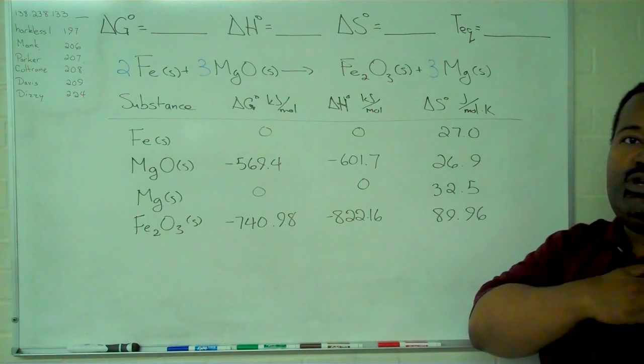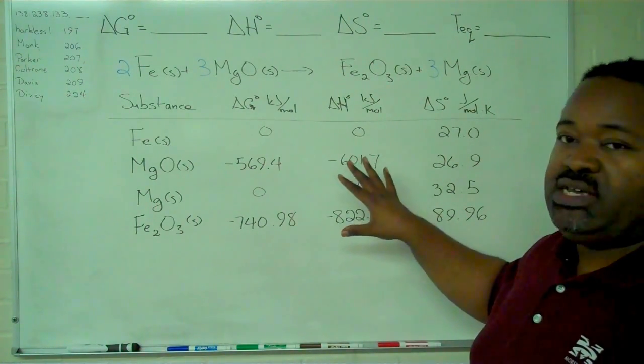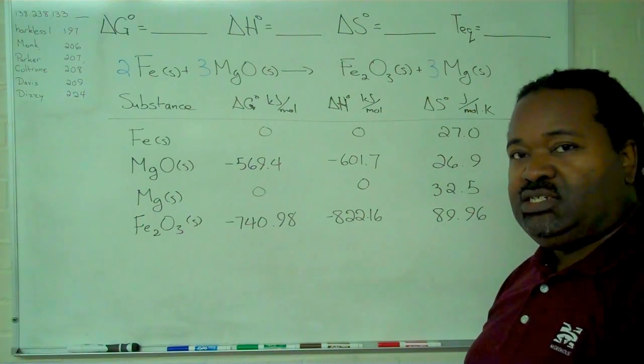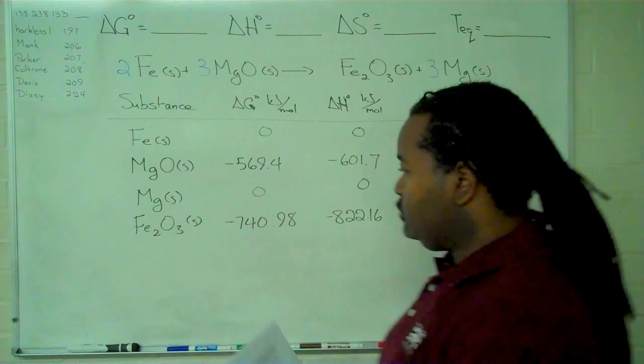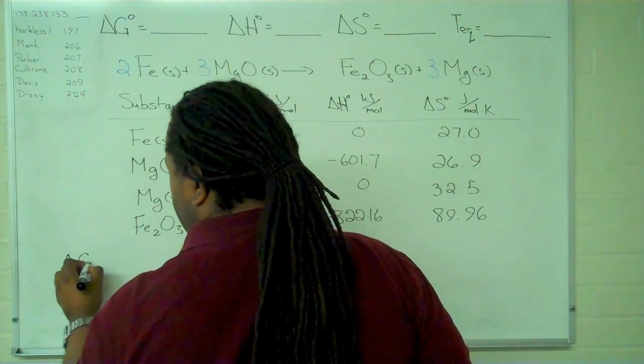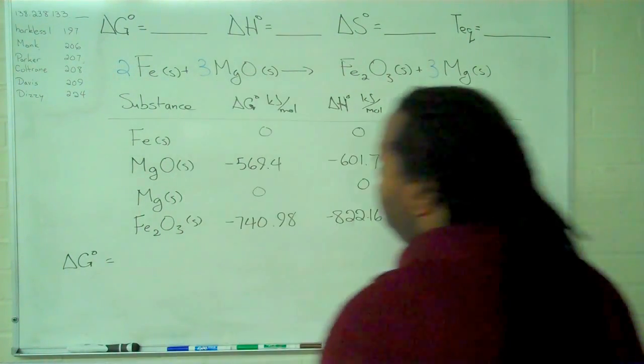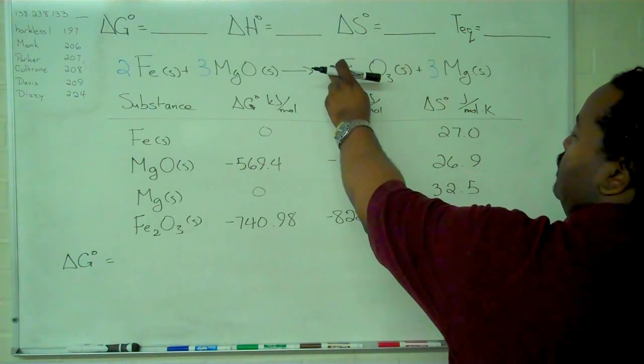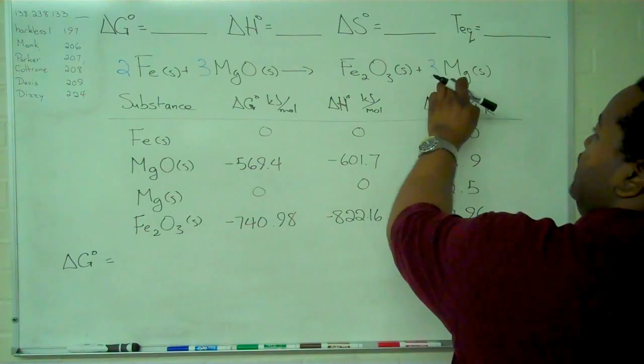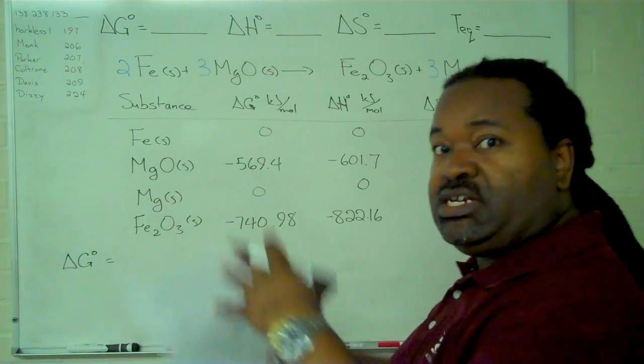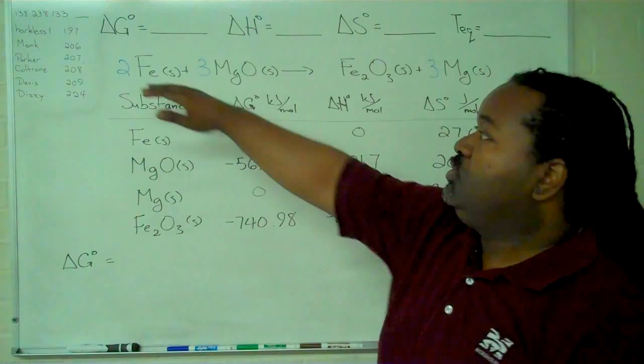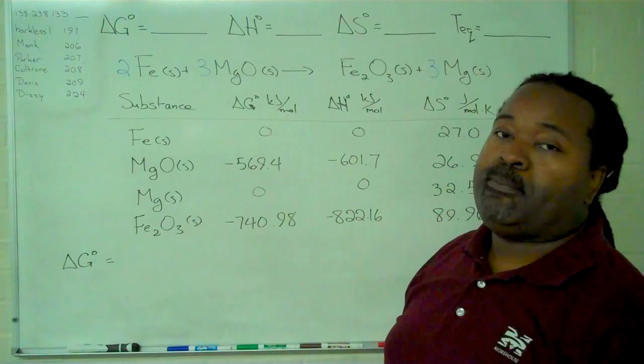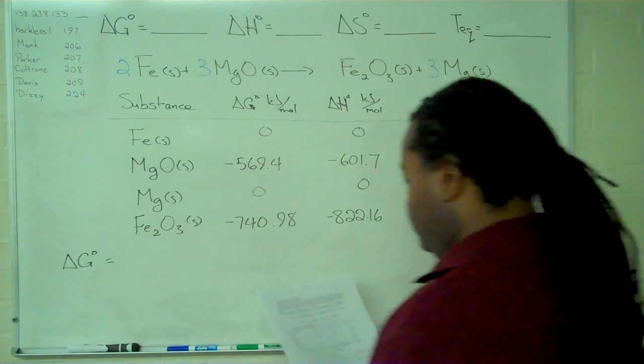So now that we have all of these values, the next step is to apply the stoichiometric sum of products minus the stoichiometric sum of reactants. And so for delta G standard, that means that we're going to have 1 times the value for our iron 3 oxide plus 3 times the value for magnesium minus the entire quantity of 2 times our value for iron plus 3 times our value for the magnesium oxide.